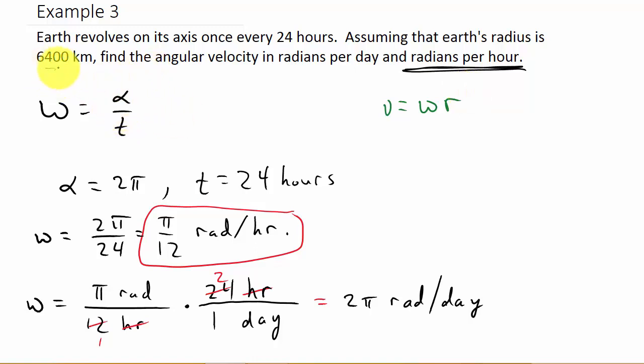Well, we've got the radius. They told us to assume it's 6,400 kilometers. And we have the angular velocity. Actually we've got it twice - radians per hour and radians per day. Well, let's use the radians per hour.